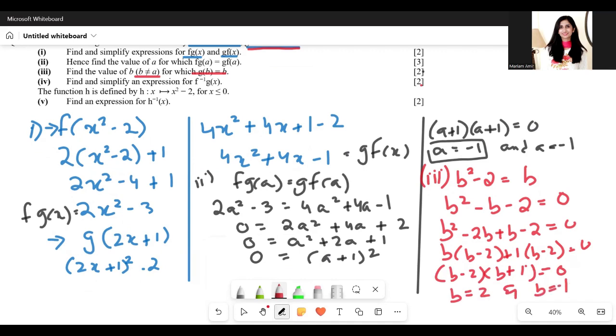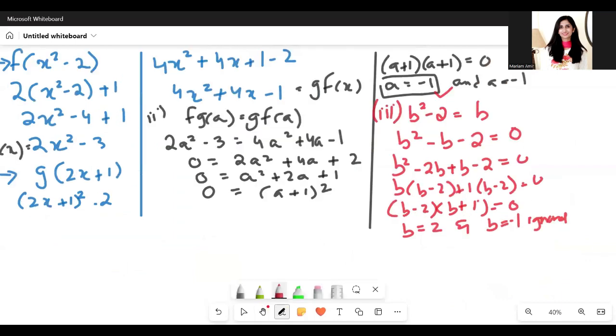However, the question said that b cannot equal a, and a came out to be negative 1. So this one has to be ignored because b cannot equal a. Ignored because b is not equal to a. And this is the only answer.